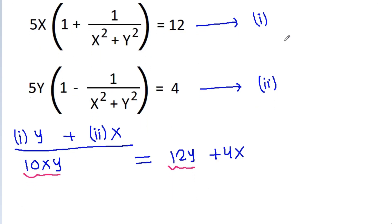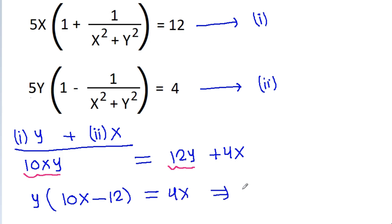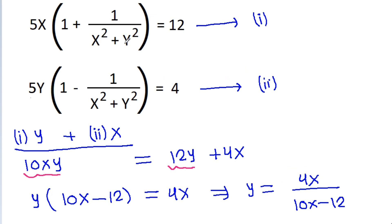Now we have 10xy and 12y. If we take y common, then we get y times (10x minus 12) equal to 4x, so y is equal to 4x divided by (10x minus 12). If we substitute the value of y into any equation, we get x² plus y², which leads to a very complicated equation in x to the power 4. So this is not a good approach.